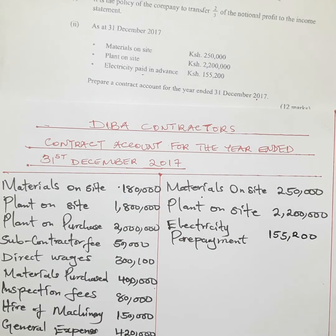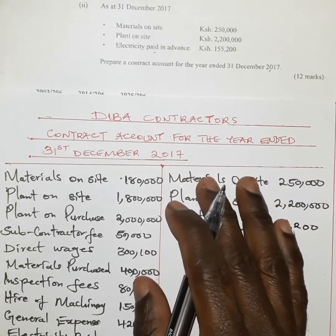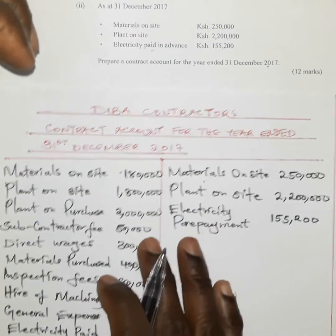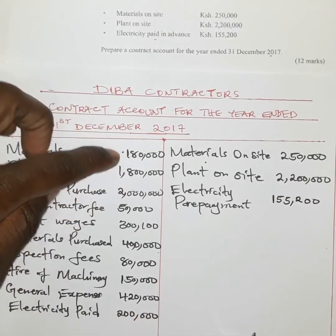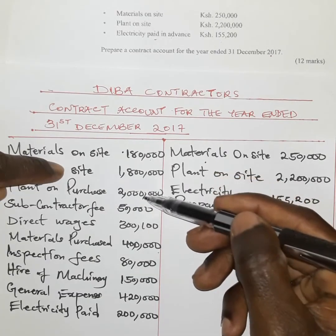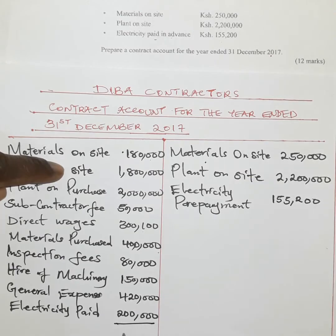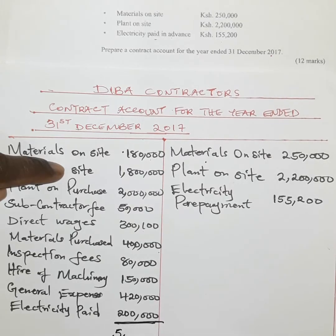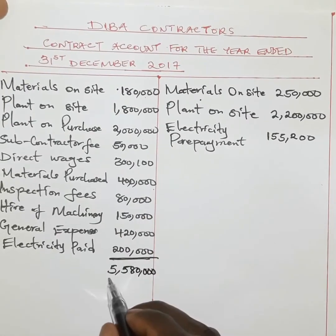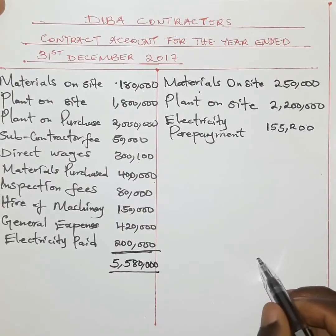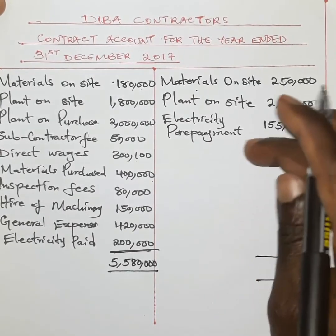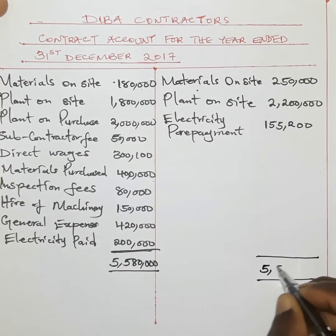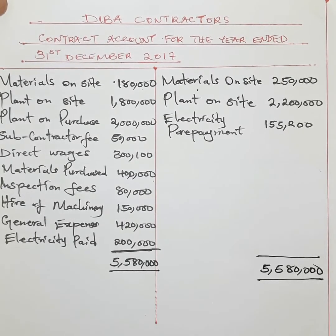The cost of work done is the difference between the two side totals. When we add all items on the debit side we get a total of 5,508,000. This must equal the total on the credit side after including the cost of work done as a balancing figure, giving a credit total of 5,580,000.